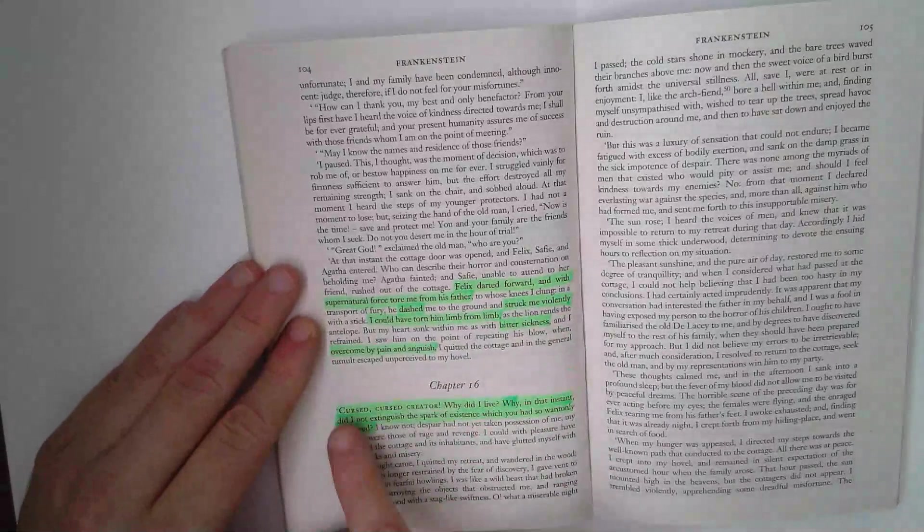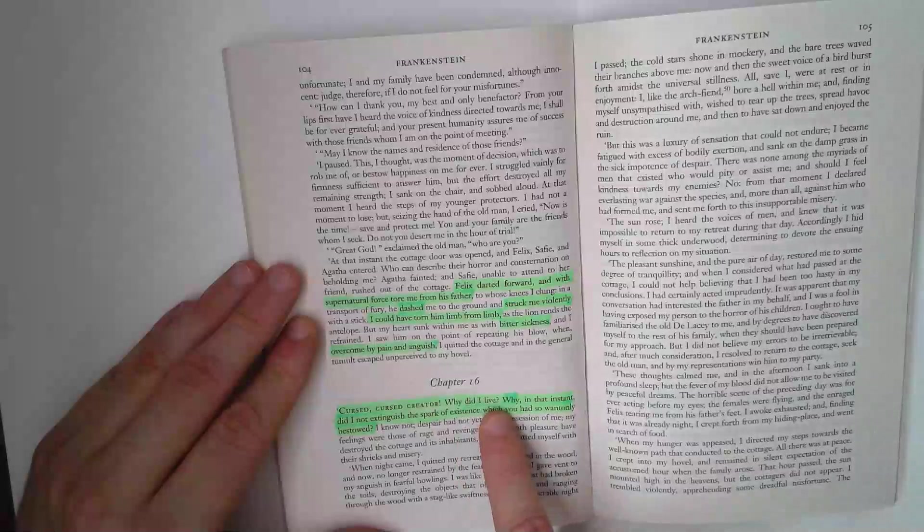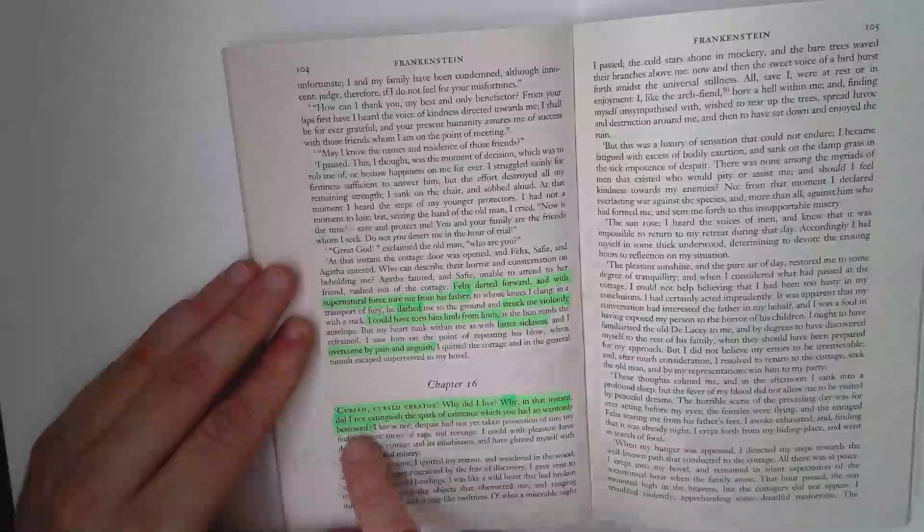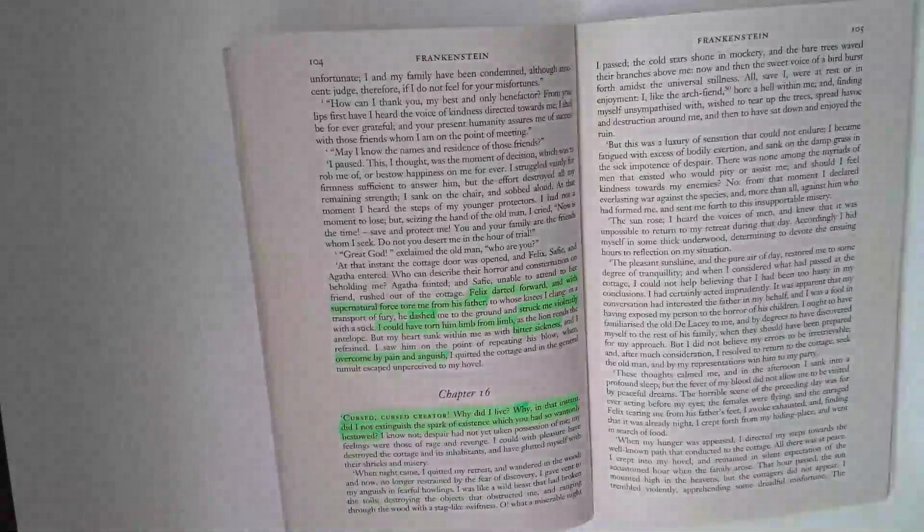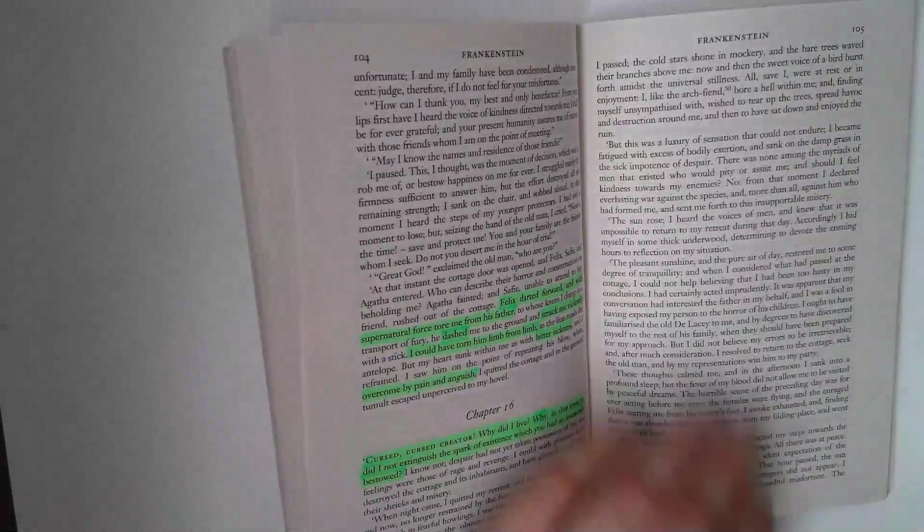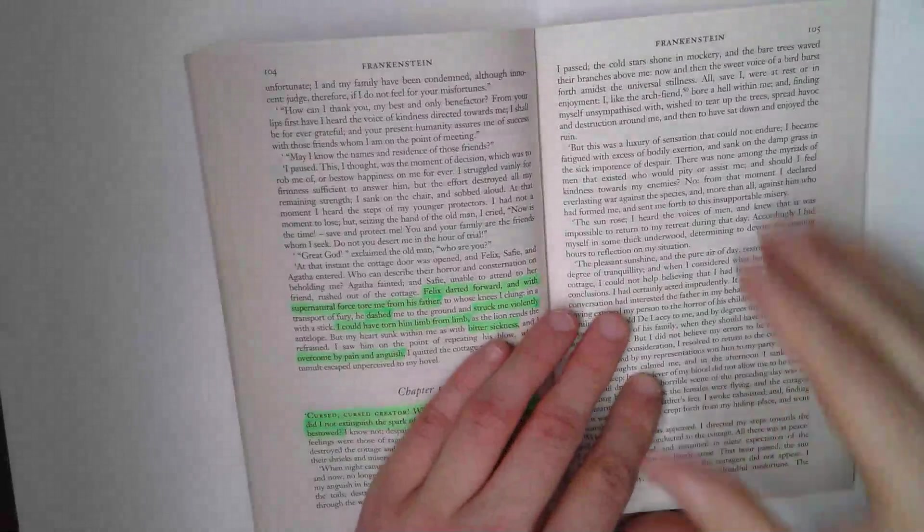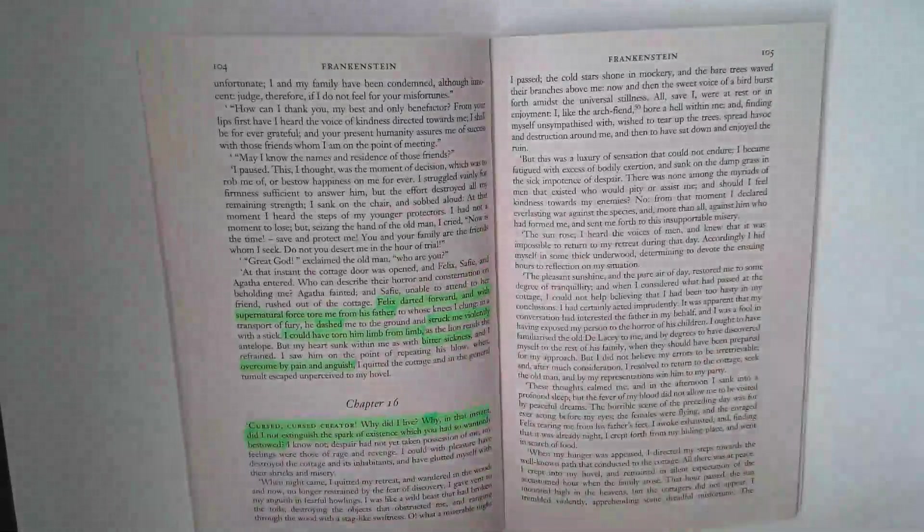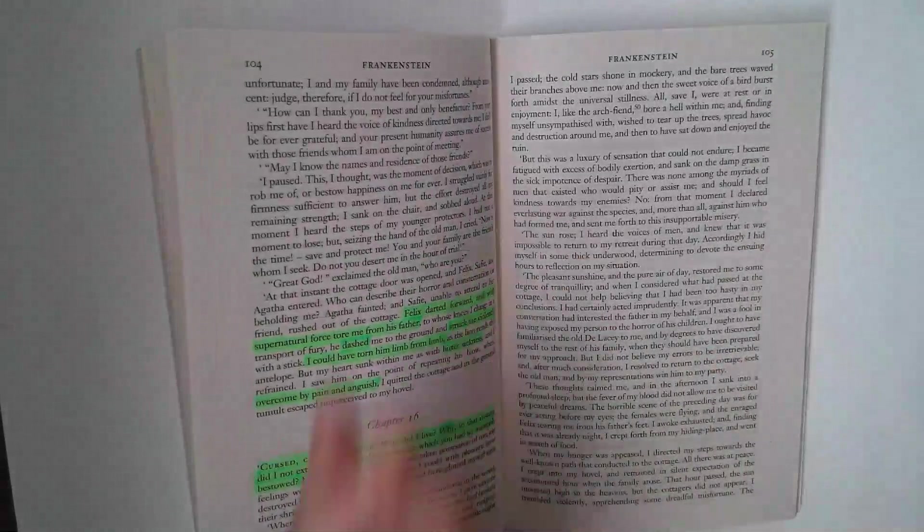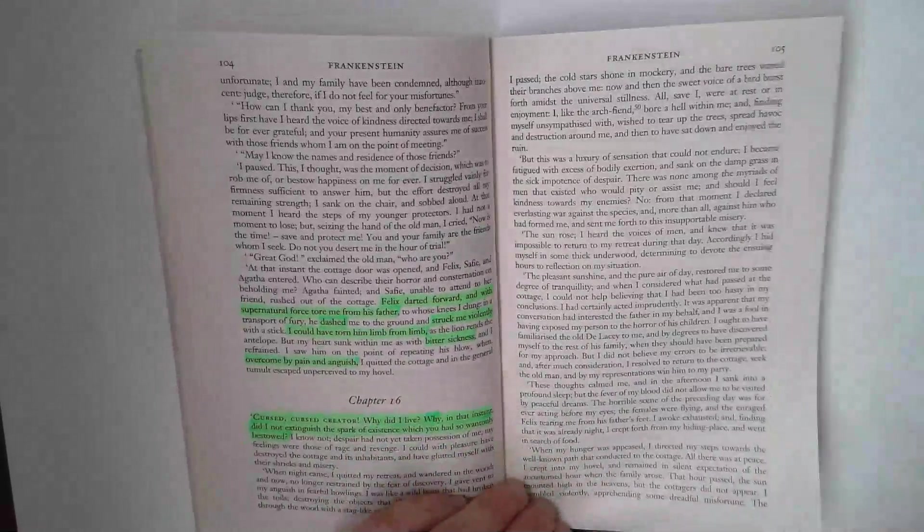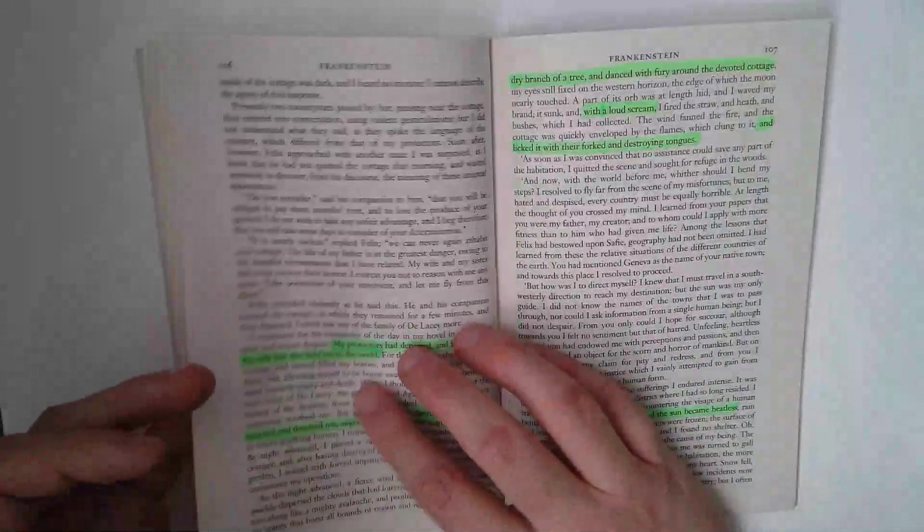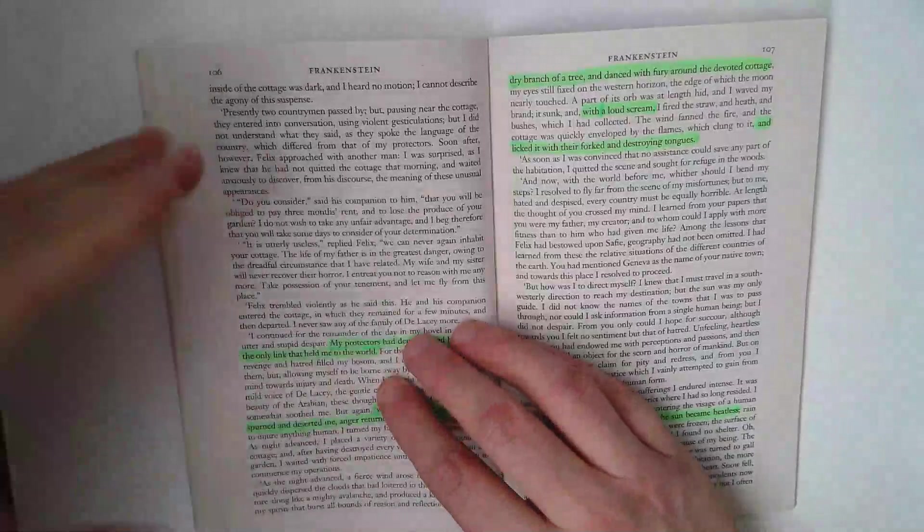And it's met by anger in chapter 16. Cursed, cursed creator. Why did I live? Why in that instant did I not extinguish the spark of existence which you had so wantonly bestowed? The creature contemplates suicide there. But he escapes, and a bit like Victor really, he flees. He goes into nature. He collapses. He's consumed by anger and fear and emotions and suffers.